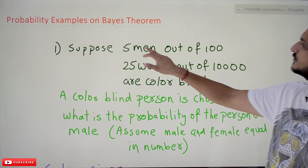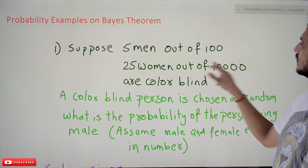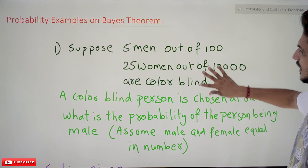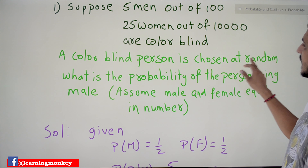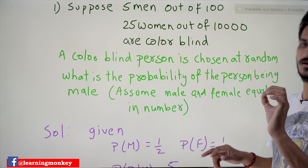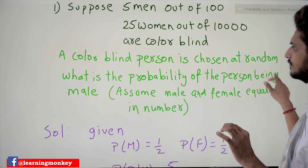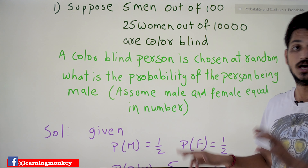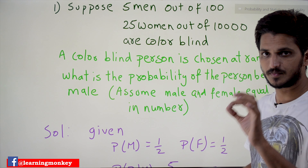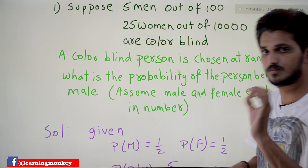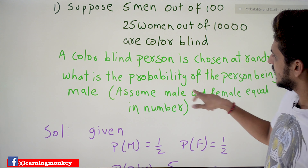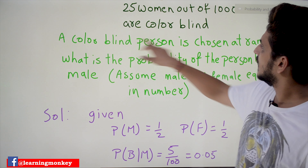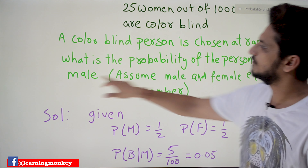Our first example: suppose five men out of a hundred are color-blind, and twenty-five women out of ten thousand are color-blind. A color-blind person is chosen at random — we are randomly going to pick a color-blind person. What is the probability that the person is male? It is given that assume male and female are equal in number. In that group we have an equal number of male and female persons.